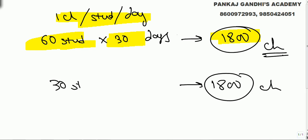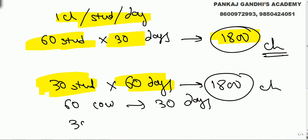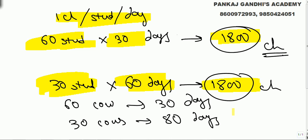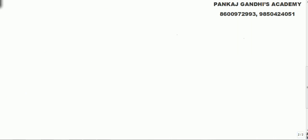If we have 30 students instead, it will last for 60 days. So chocolates: 60 students → 30 days, 30 students → 60 days. But in this question, 60 cows eat the grass in 30 days, yet 30 cows eat the grass in 80 days — not 60. This is because chocolates do not grow every day, but grass grows every day. So it's not linear — with 30 cows it's going to be more than 60 days because grass keeps growing.